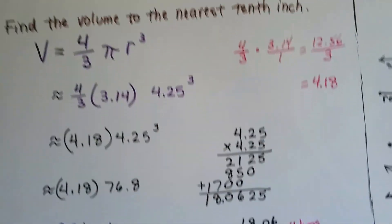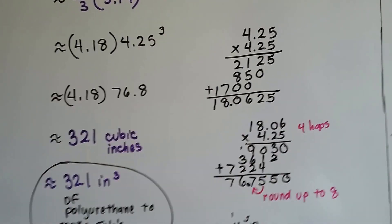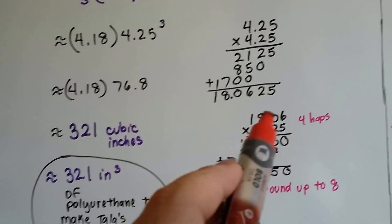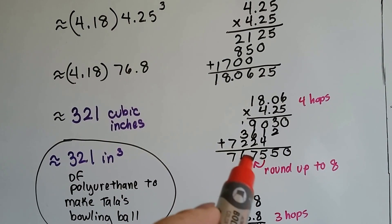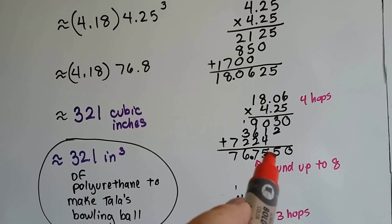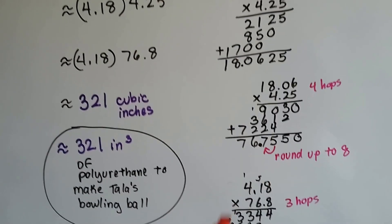We only need to go to the tenth anyway, but to be accurate, I decided to include the hundredths in case that affects the tenths. So I multiplied 18.06 by 4.25 and got 76.75. I'm going to round this 7 to an 8 because the 5 tells it to go up to the next number. So I've got 76.8.